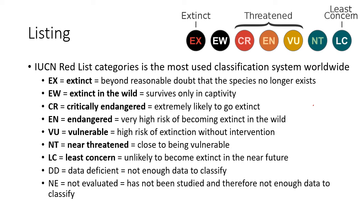Critically endangered means they're very likely to become extinct. Endangered means a very high risk of being extinct in the wild. Vulnerable means high risk of extinction without any intervention. All three of these are what we call threatened — they're at different levels of being threatened. Near threatened means they're close to being vulnerable — populations are starting to decline or habitat is starting to be lost. Least concerned means we don't have to worry about them, like crows or pigeons — they do just fine even in human-populated areas.